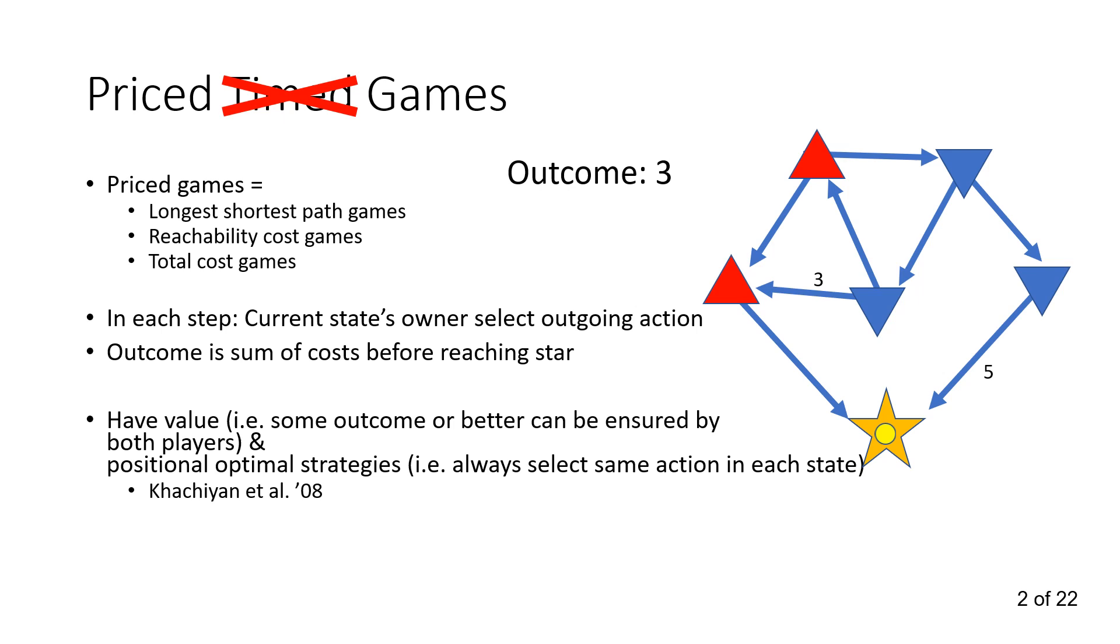So these games have a value that is some outcome that can be ensured by both players by playing well, and they have positional optimal strategies, meaning that in a given state, they can always do the same thing. So this is the optimal values and the optimal strategies look like this.